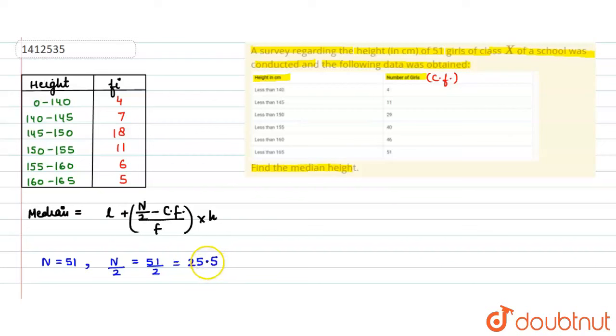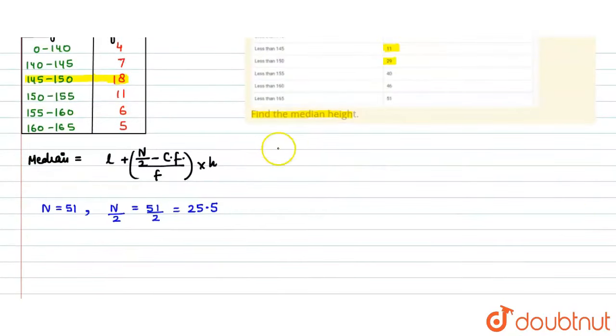Now, where do you see 25.5? Let's see the cumulative frequency. 29, 29 is the third number. It means 145 to 150. The cumulative frequency is the preceding class. This is the lower limit.